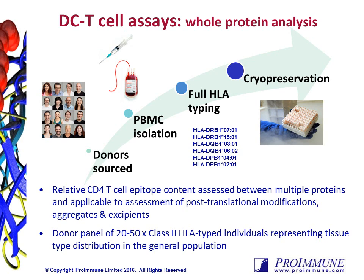In this assay, the CD4 T-cell responses to whole protein test candidates are measured using flow cytometry. We would typically suggest a panel of 20 to 50 donors that we select from our Proimmune donor cohort. These donors are sourced from the UK NHS Blood and Transplant Service. The PBMCs are isolated and then cryopreserved, and all donors are fully typed for Class 2 and then selected for each assay to best represent the tissue type distribution in the general population. We can measure up to 18 test articles per donor cohort, and each test protein is run in eight replicates alongside two control proteins, including KLH and PPD. The assay has a very fast turnaround, with data reports provided in typically just four to six weeks from receipt of the test proteins.